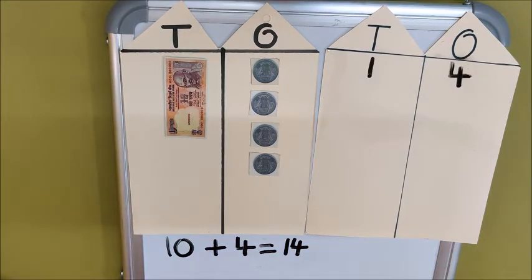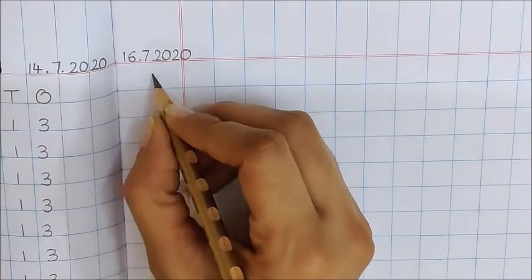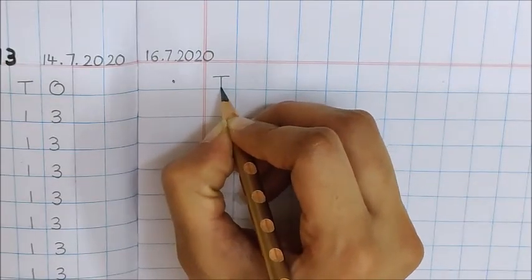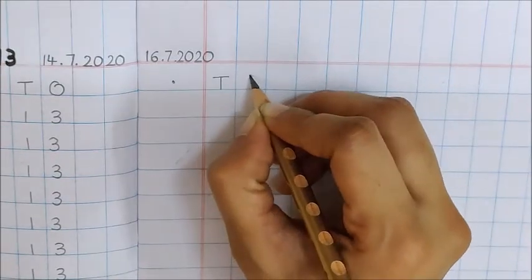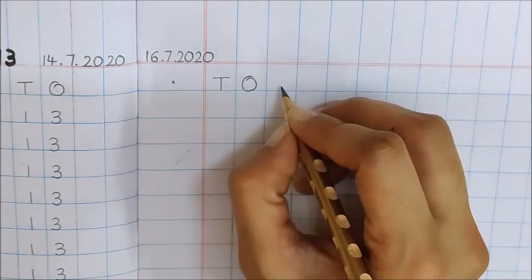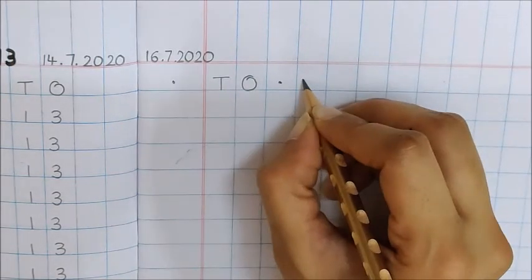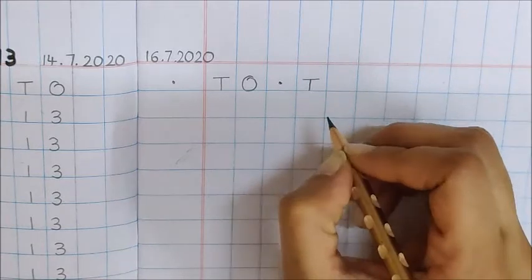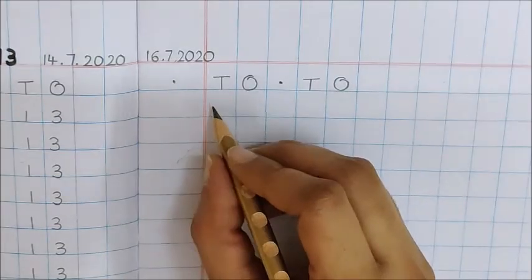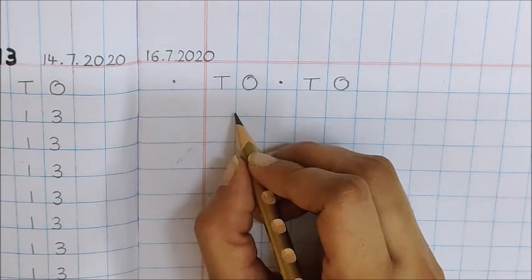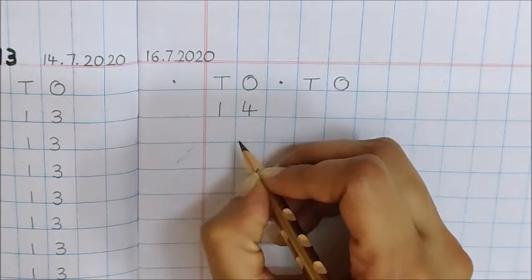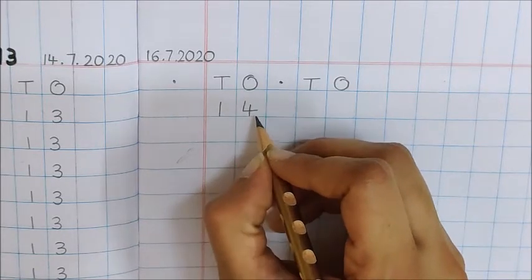Okay children, now take your maths notebook and below the date, put one dot. Now in the next box, write with me: T for 10's house, and in the next box write O for 1's house. Again put one more dot, write T for 10's house and O for 1's house. Now children, under the first TO, we will write number 14. 1 ten and 4 extra is number 14 — see children, under TO I am writing 14.